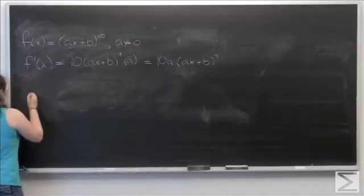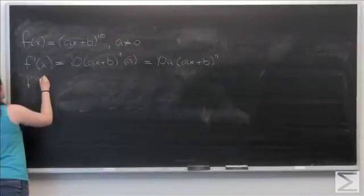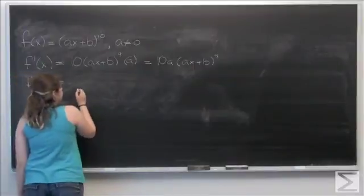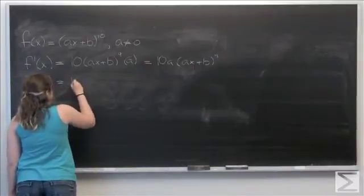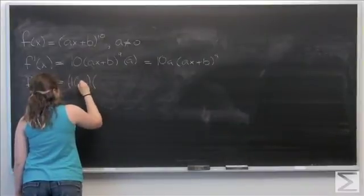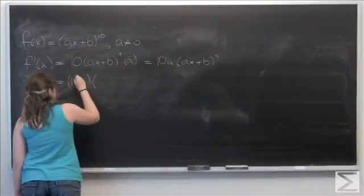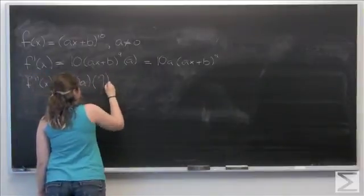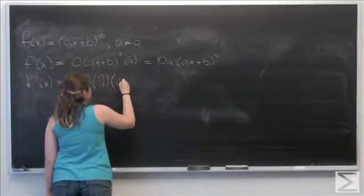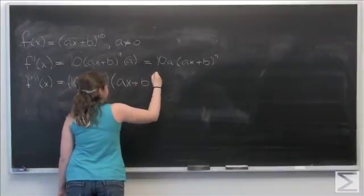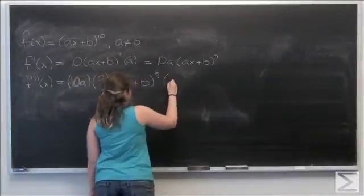Now we're going to take the second derivative. So this derivative equals 10a times 9 times ax plus b to the 8th, and again times a.